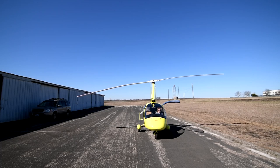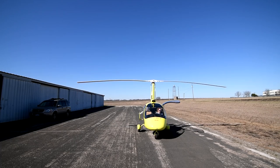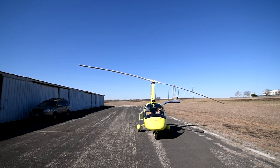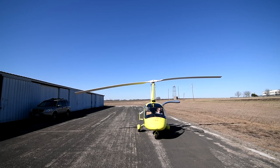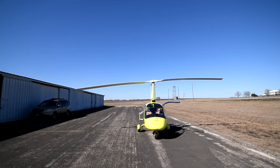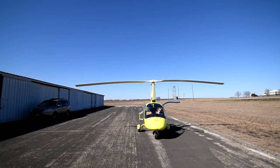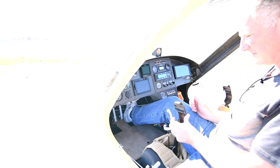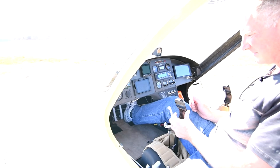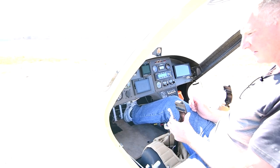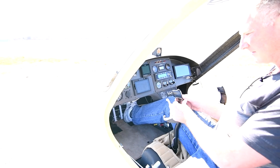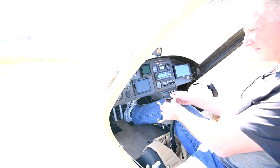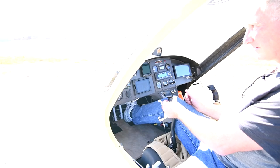This is what it looks like from the front when the control stick is moved forwards and backwards. To give an idea of what blade flap might look like while taxiing, we took the gyroplane out on a windy day — maybe 15 miles an hour. We put in about 20 RPM for the rotor and then took a picture of the control stick. You can see that it gets jerked around pretty good.